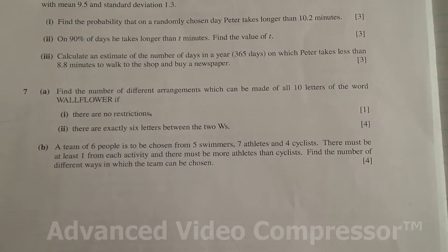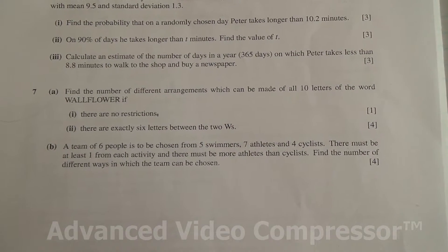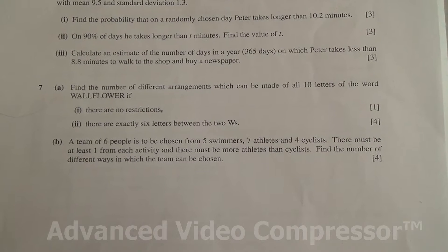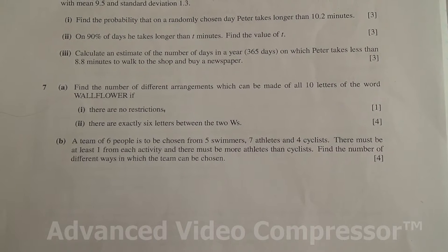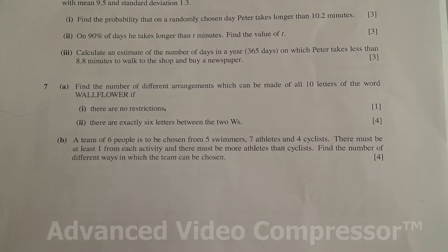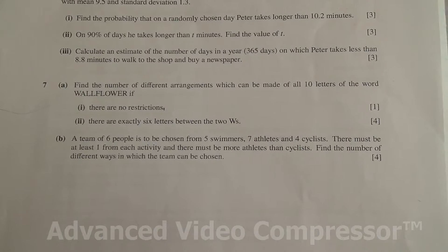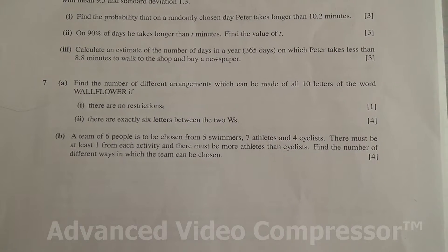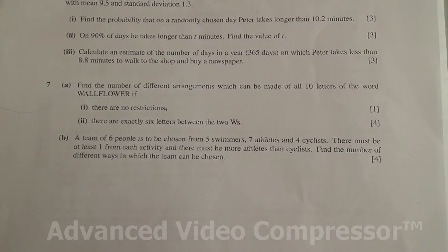Question number seven. Find the number of different arrangements which can be made of all ten letters of the word WALLFLOWER if there are no restrictions, and for the second part there are exactly six letters between the two Ws.